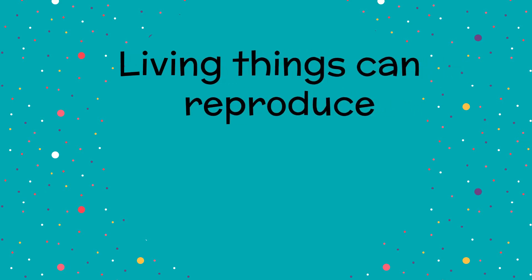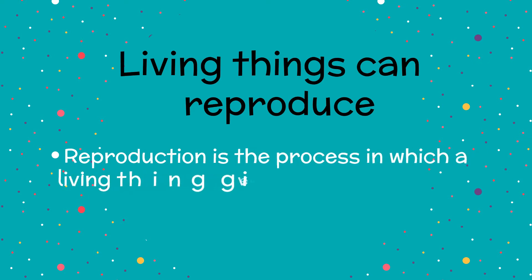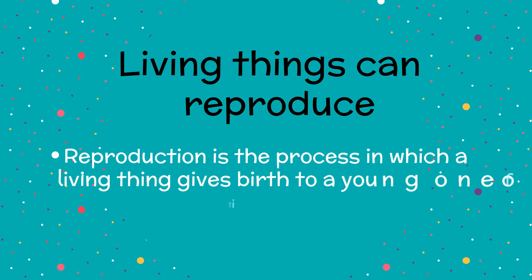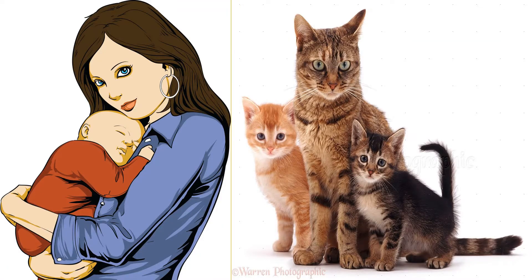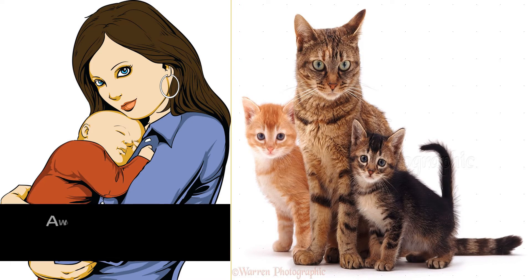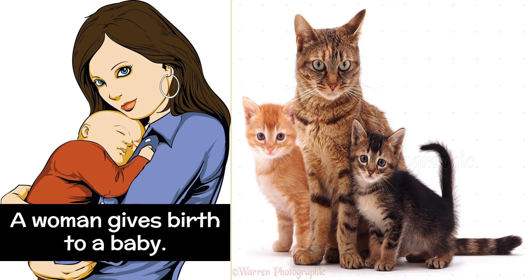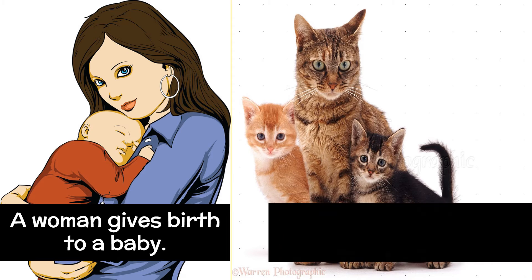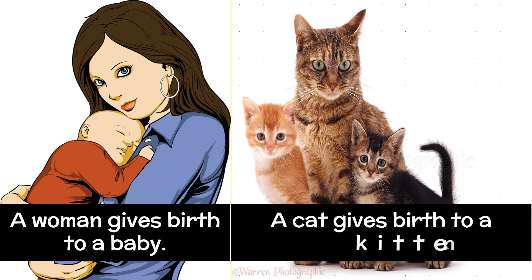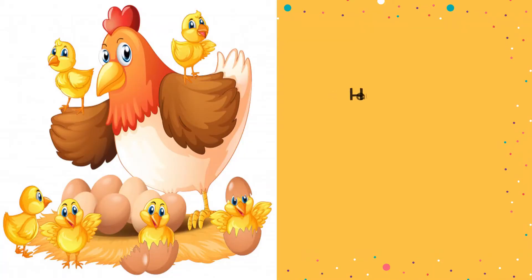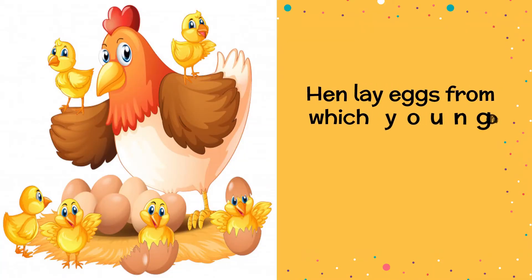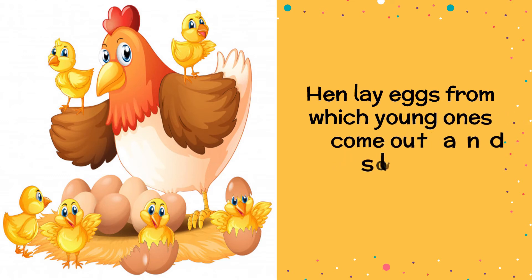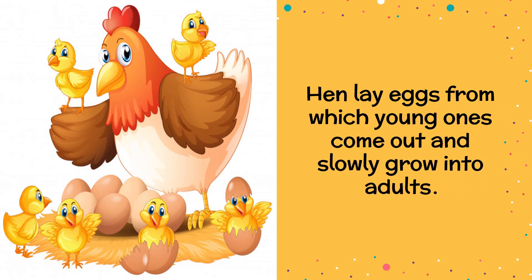Living things can reproduce. Reproduction is the process in which a living thing gives birth to a young one of its own kind. For example, a woman gives birth to a baby. A cat gives birth to a kitten. Hens lay eggs from which young ones come out and slowly grow into adults.